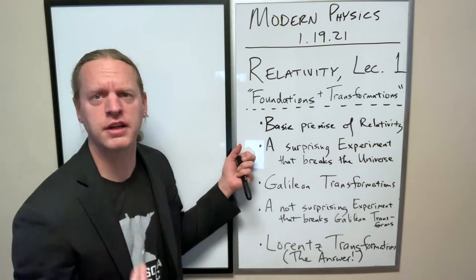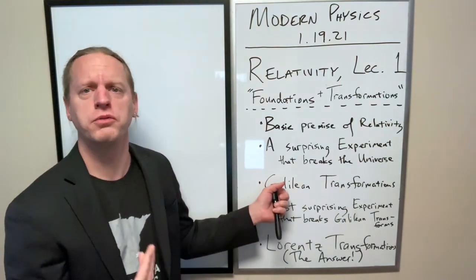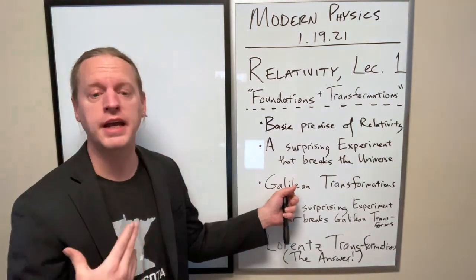And that's where things kind of get interesting, because from there, we introduce a way to reconcile that, which we call the Galilean transformations.